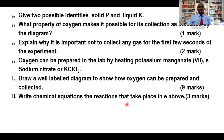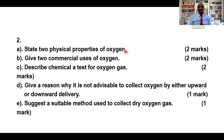We have explained why it is important not to collect any gas for the first few seconds of the experiment. Oxygen can be prepared in the laboratory by heating potassium manganate 7, sodium nitrate, or potassium chlorate. You are required to draw a well-labeled diagram to show how oxygen can be prepared and collected. Write chemical equations for the reactions that take place. State two physical properties of oxygen gas. Give two commercial uses of oxygen gas. Describe a chemical test for oxygen gas, and give a reason why it is not advisable to collect oxygen by either upward or downward delivery. Then suggest a suitable method that can be used to collect dry oxygen gas.